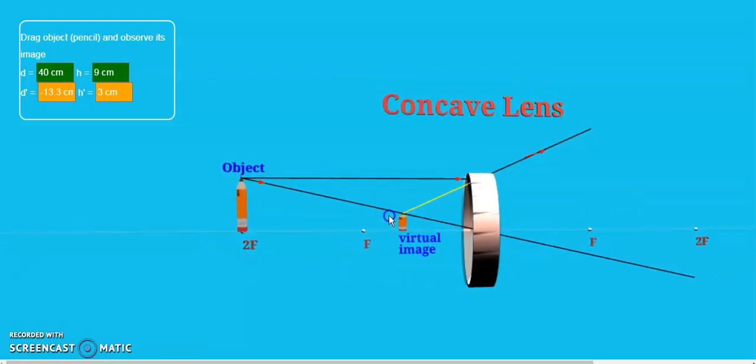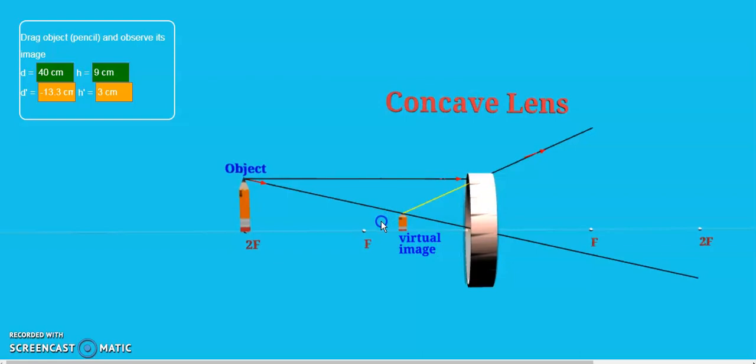So we just want to find out how actually the image formation changes if you change the object position in front of the concave lens.